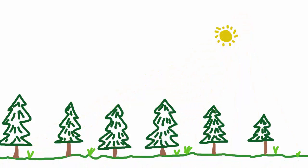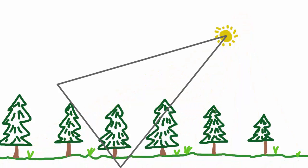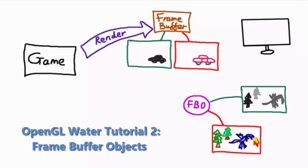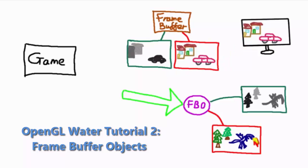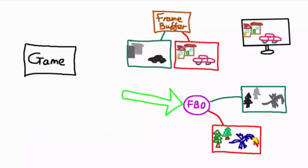To do this we're first going to render the scene from the light's viewpoint, so as if the camera were in the light's position. We're then going to be rendering the scene from the light's perspective to a framebuffer object. If you haven't done the water tutorial series then I suggest you stop watching this tutorial now and go watch the first 9 minutes of the second water tutorial, which will explain all about framebuffer objects, what they are and how we can use them.